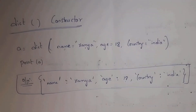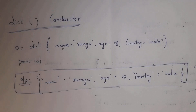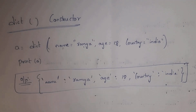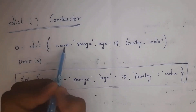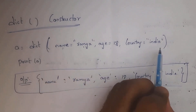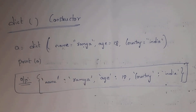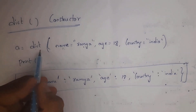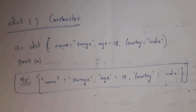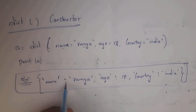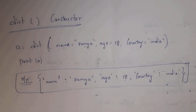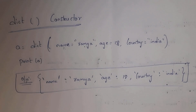Using the dict() constructor, you can convert multiple variables and values into a dictionary. For example: a = dict(name='ramya', age=18, country='india'). Here 'name', 'age', and 'country' are variables and 'ramya', 18, and 'india' are their values. When you run this code, the output will be {'name': 'ramya', 'age': 18, 'country': 'india'} — strings are represented in single quotations.